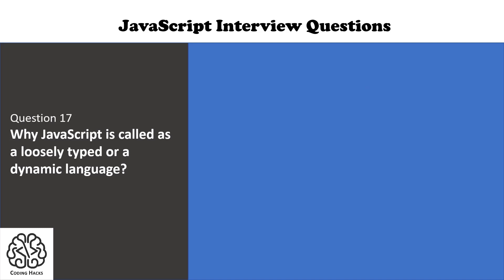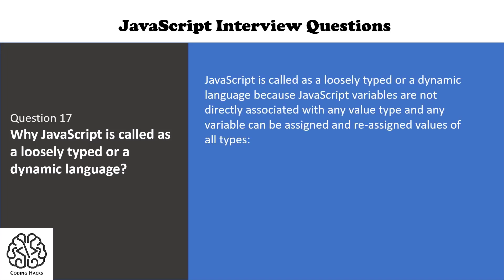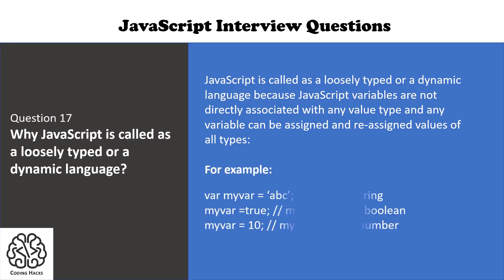Question number 17 is: why is JavaScript called a loosely typed or dynamic language? JavaScript is called loosely typed or dynamic because JavaScript variables are not directly associated with any value type, and any variable can be assigned or reassigned values of all types. For example, a variable myVar can first hold a string, then be reassigned to a boolean, and then reassigned to a number.